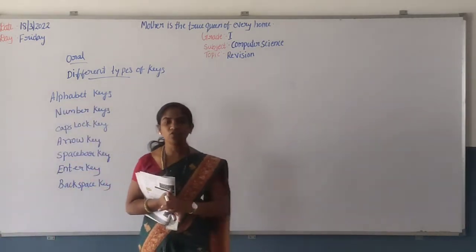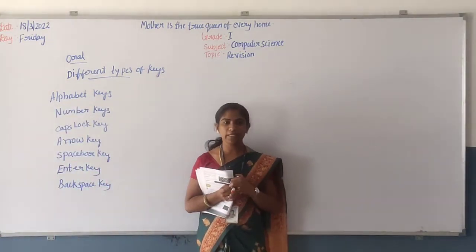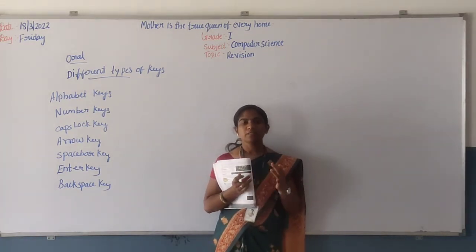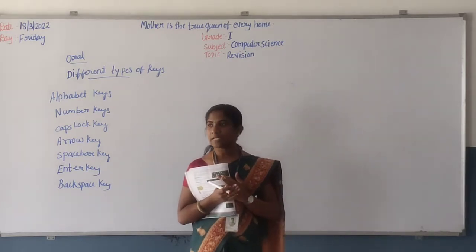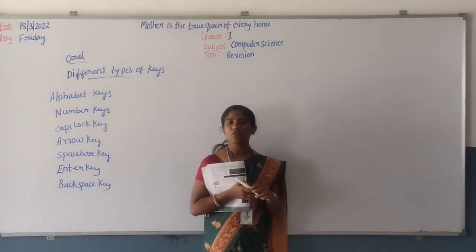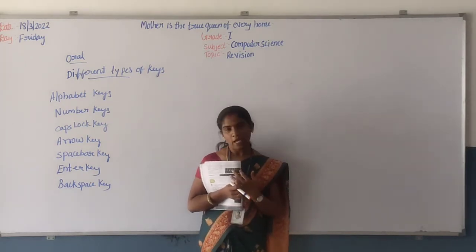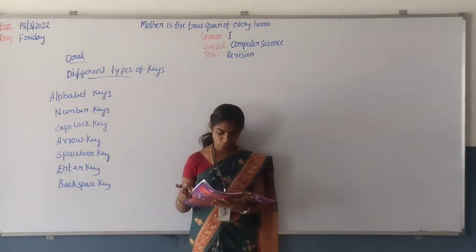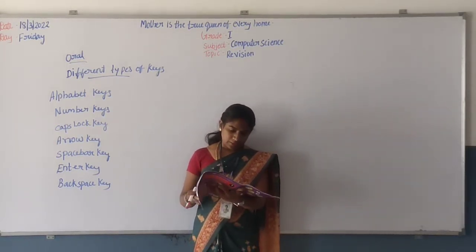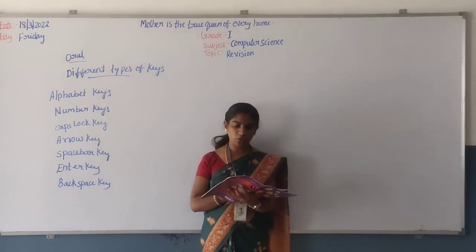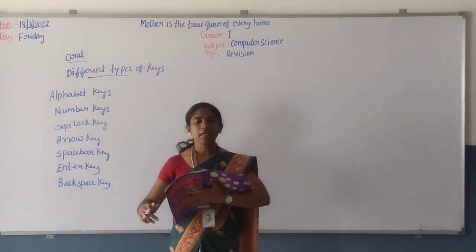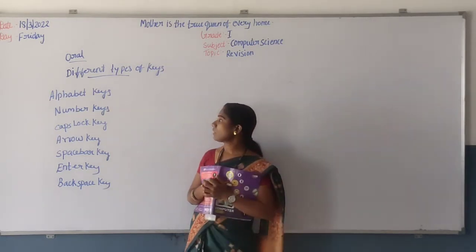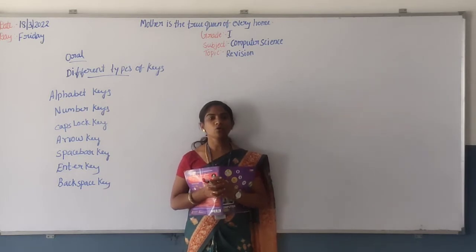Then I'll ask about CPU and video. I think everyone knows — this one is the unit. Very good. The CPU — central processing unit. Yes. And the video — this one is the unit. Ok, understood children? This is the oral.